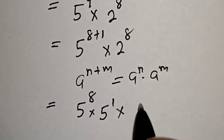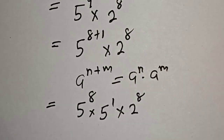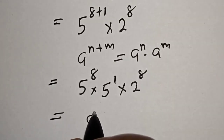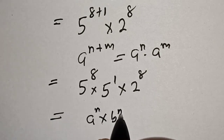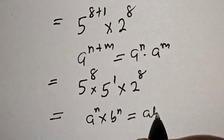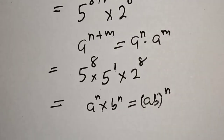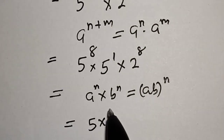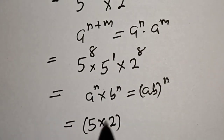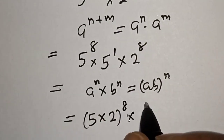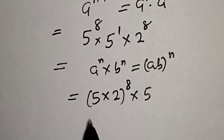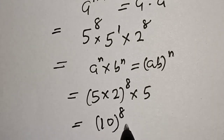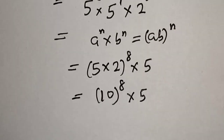Now take note of this rule: a raised to power n multiplied by b raised to power n equals a times b, raised to power n. We can combine 5 raised to power 8 and 2 raised to power 8, since they share the same power, giving us 5 times 2 raised to power 8, multiplied by 5 raised to power 1. That gives us 10 raised to power 8 multiplied by 5.